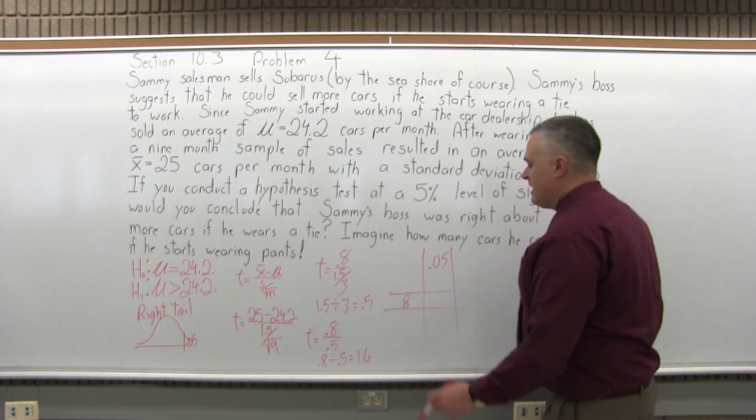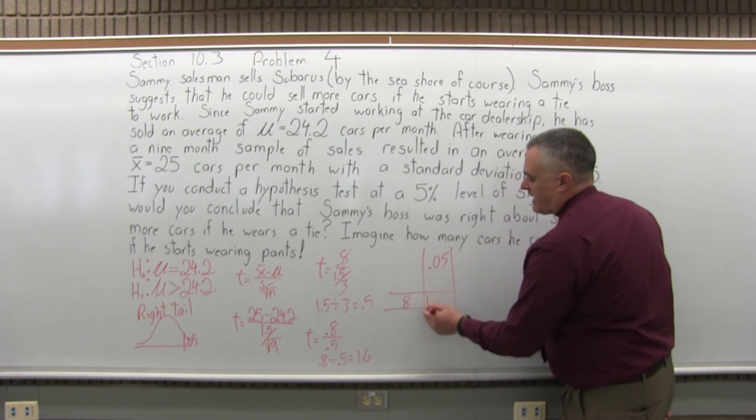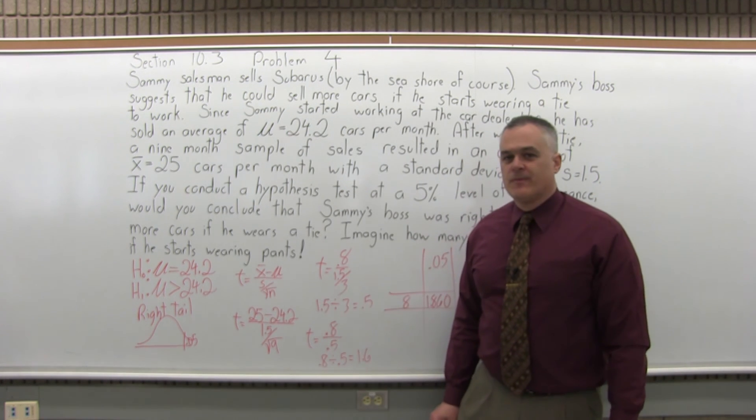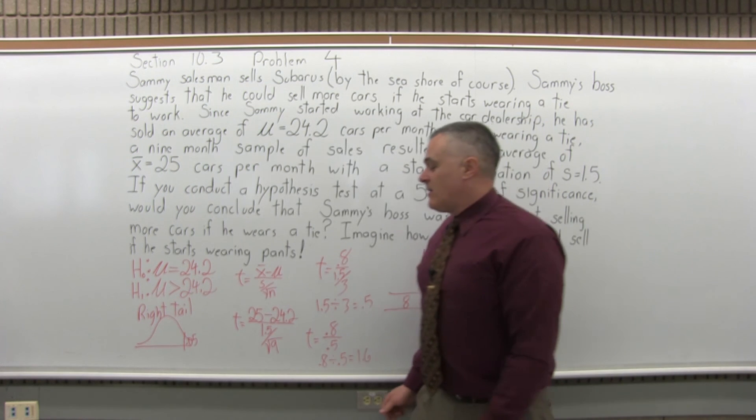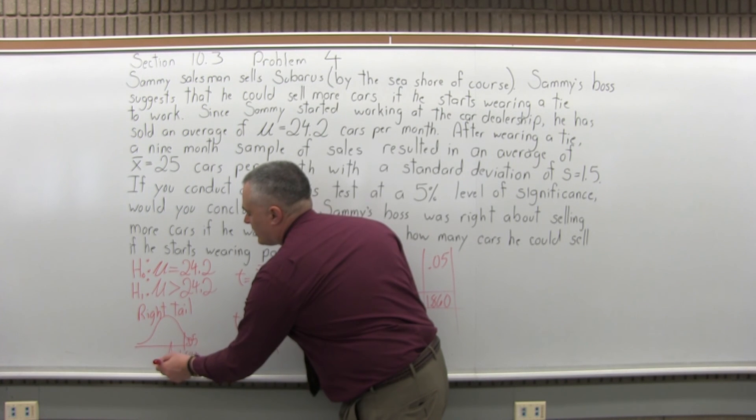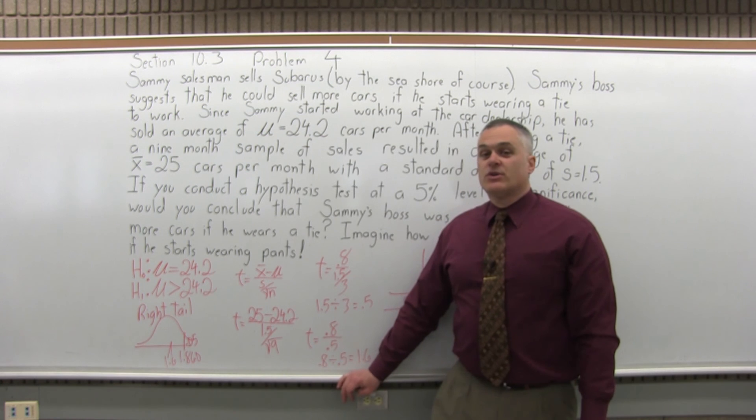And if you intersect the row with 8 degrees of freedom in the column with 0.05, you'll see that it intersects at 1.860. So the critical value is 1.860. Our computed value for T was 1.6, which isn't quite big enough to go out into the critical region.